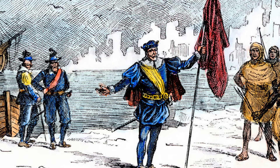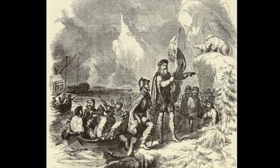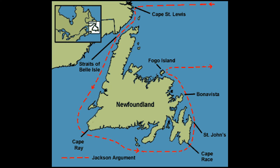Historians think Cabot made landfall somewhere in the area of southern Labrador, Newfoundland, or Cape Breton Island in present-day Canada, but the exact location isn't known for certain. Cabot didn't spend much time on land. It appears that he and his men got off the ship only once and didn't wander inland more than a few hundred feet. They didn't encounter any Native Americans but found signs of their settlement.